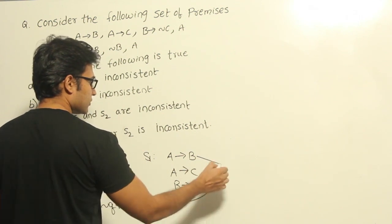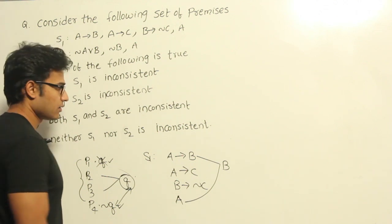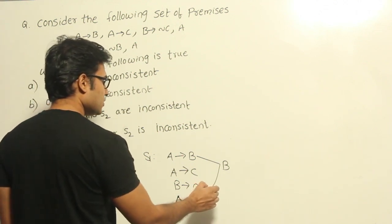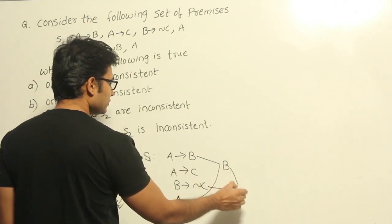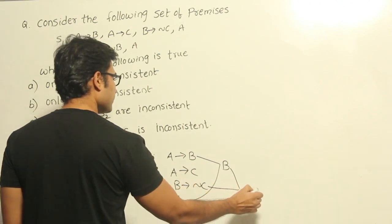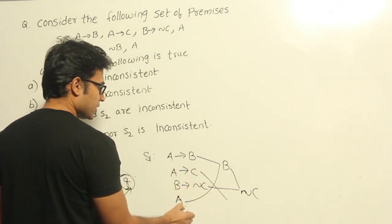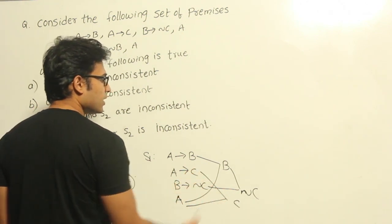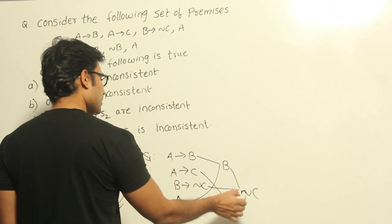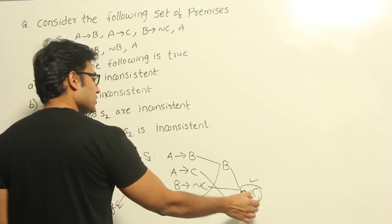From these two you can get B, right? And from these two you are getting negation C. And again using these two, this one and this one, you can get C.